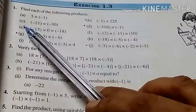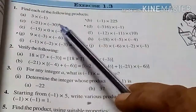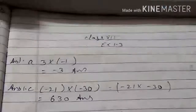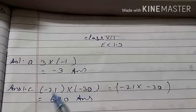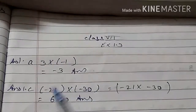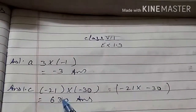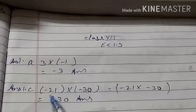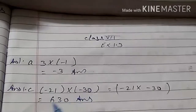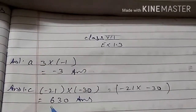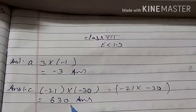Question number 1B: minus 21 multiply minus 30. In this sum, we see that both the integers are negative. When we multiply any 2 negative integers, the result will be positive. So 21 multiply 30 will get 630.